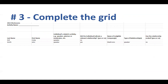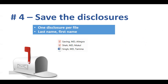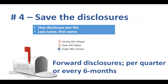Once you receive the forms, we have an Excel form which is a grid. There needs to be only one grid per activity, and only one form per speaker if they are involved in multiple sessions throughout the year. Essentially, you will have an entry for each individual that participates in the activity. We ask that you forward the grid to us quarterly or every six months. Disclosures should be reviewed and updated annually or if there's a change. We ask that you save the disclosures electronically, one disclosure per file, saved by last name and then first name, and forward those to us quarterly or every six months.